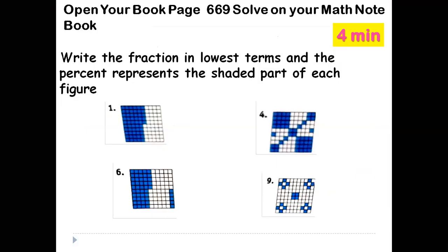Let's now do some practice in the course book, page 669. You need to solve these questions. You're going to have 4 minutes. For each grid, write the fraction that represents the shaded part in simplest form, then write the percentage. It's just about counting the shaded squares. Once you're done, you can continue watching the video.